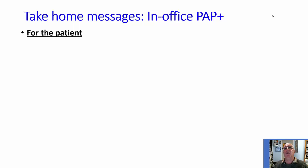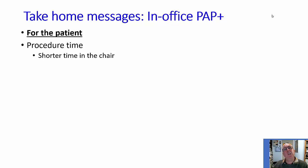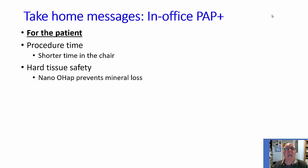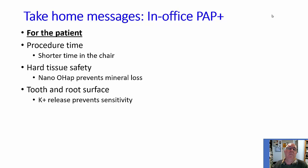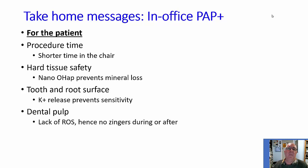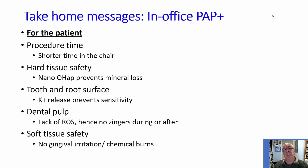So let's try to put all that together into some key take-home messages for the in-office product, focusing on the benefits for patients and then for clinicians. For the patient, first it's going to be a shorter time in the chair because the procedure of applying the gel is less complex. Secondly, we've got safety for the hard tissue because the nanohydroxyapatite prevents mineral dissolution — it saturates the gel with available mineral so that the process of mineral loss is not going to happen against that concentration gradient. There are available potassium ions in large amounts, and that's going to protect any exposed root surface or exposed dentine and prevent sensitivity. In terms of the dental pulp, because there's no reactive oxygen species, no hydrogen peroxide, there are no zingers during the treatment nor afterwards.